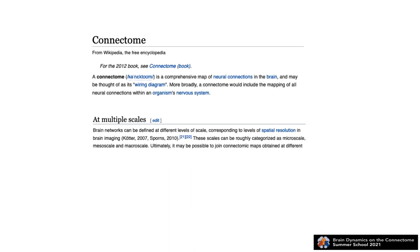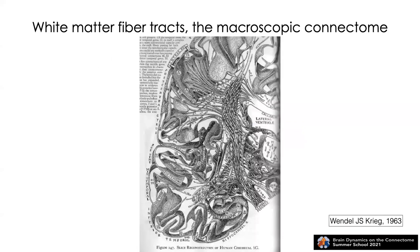The level at which we're going to focus during these two days is the so-called macroscopic connectivity level, the macroscopic scale. In this historic illustration from Wendell Creek, you see the level of description at which we are going to focus. What we consider connectivity is basically white matter bundles that coherently travel through the brain from one piece of gray matter to another. The scale here is millimeters or even several millimeters of axonal bundles.